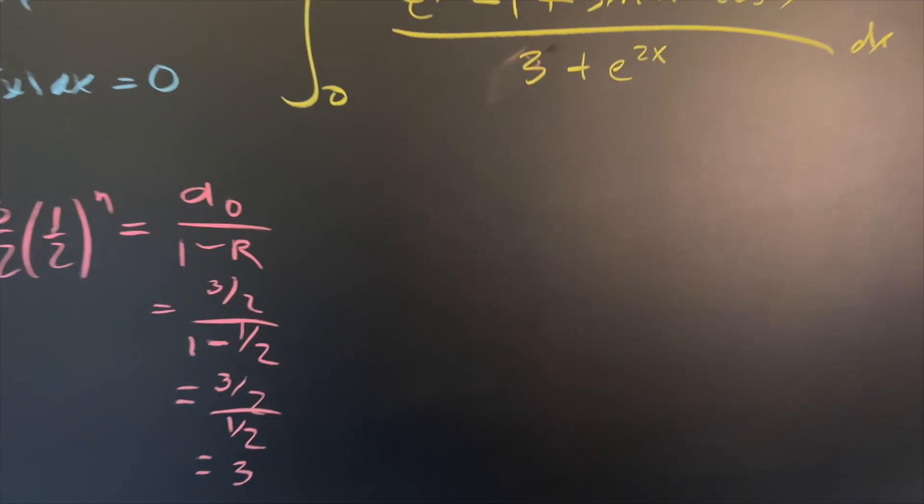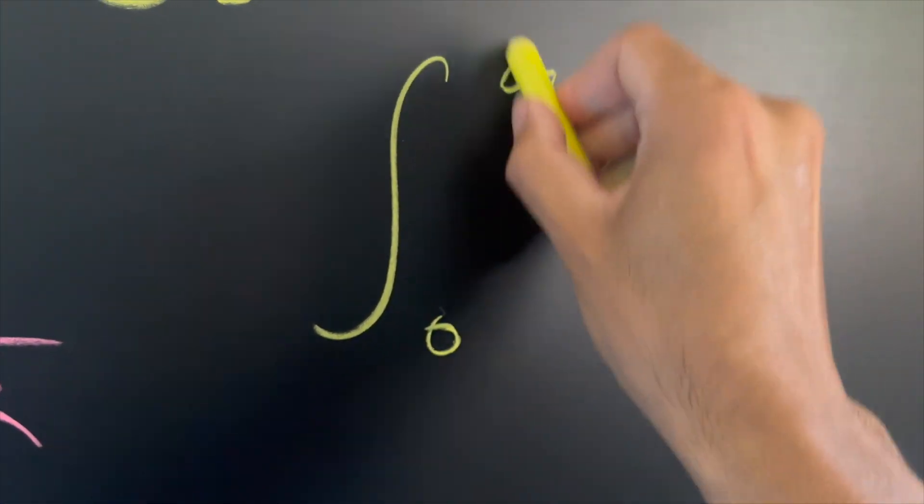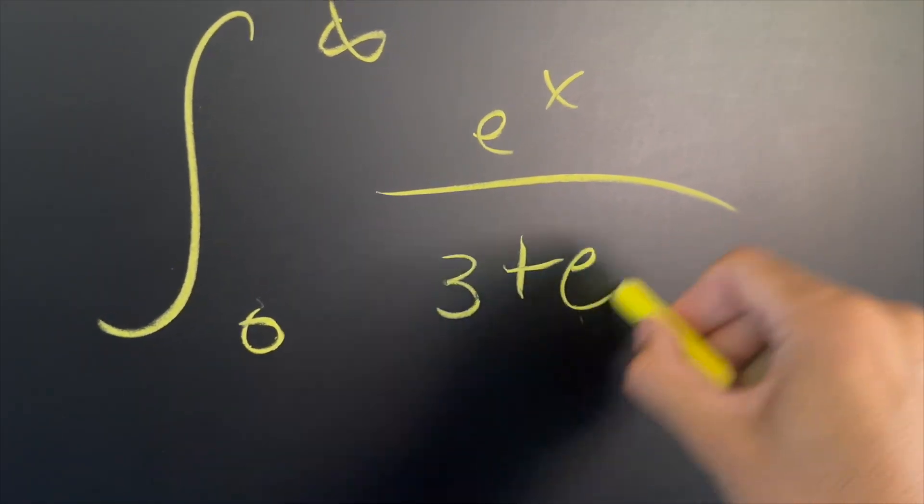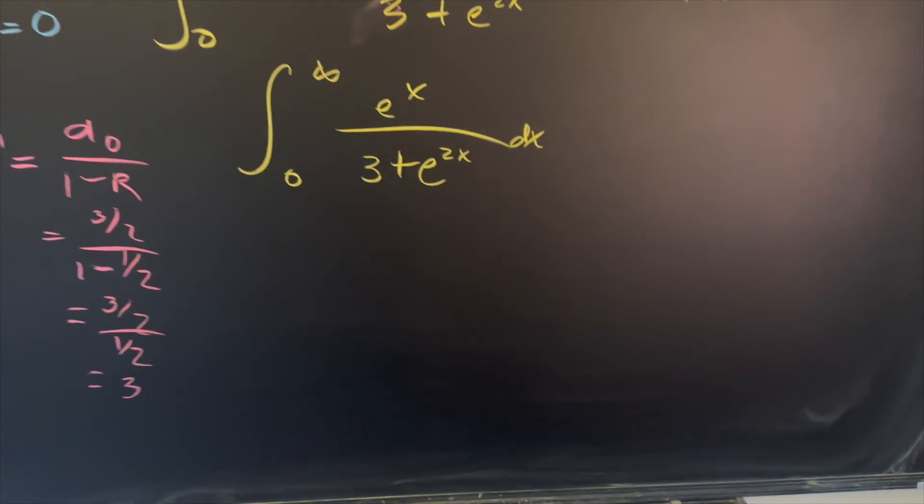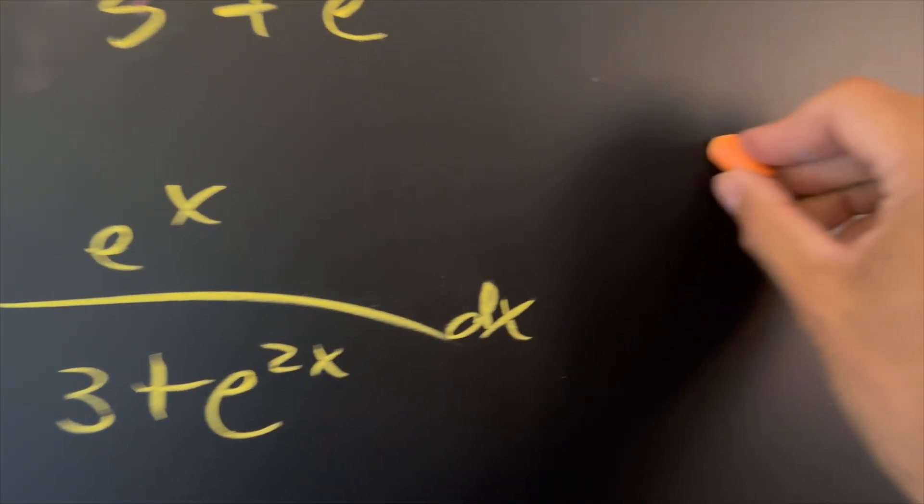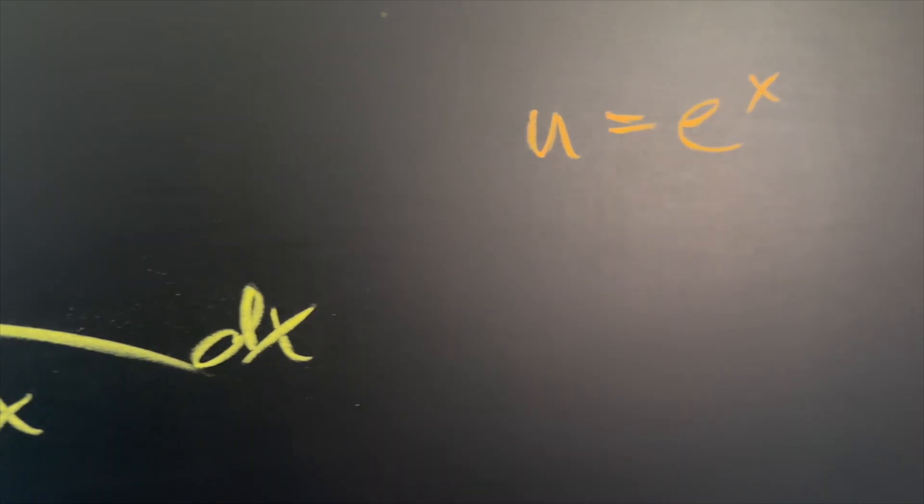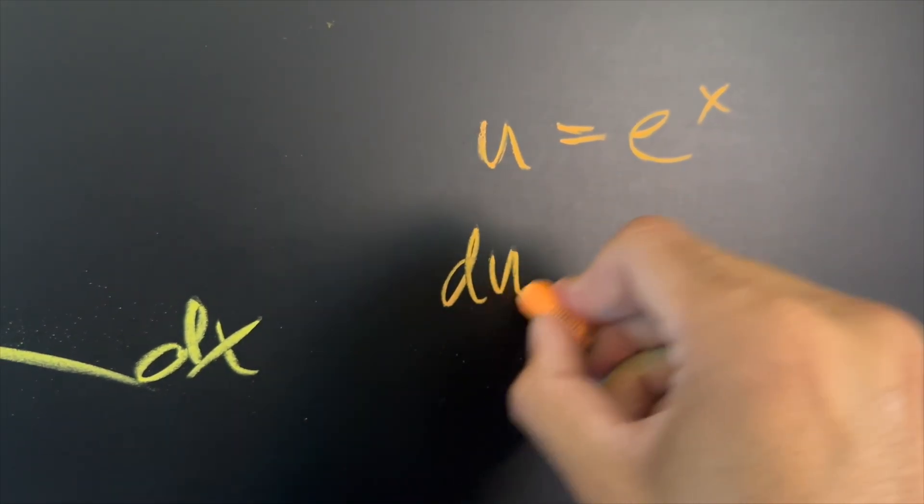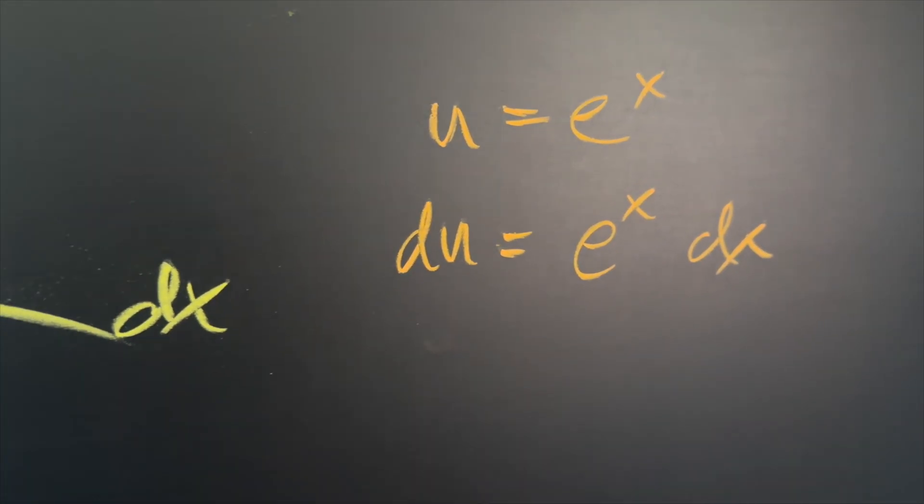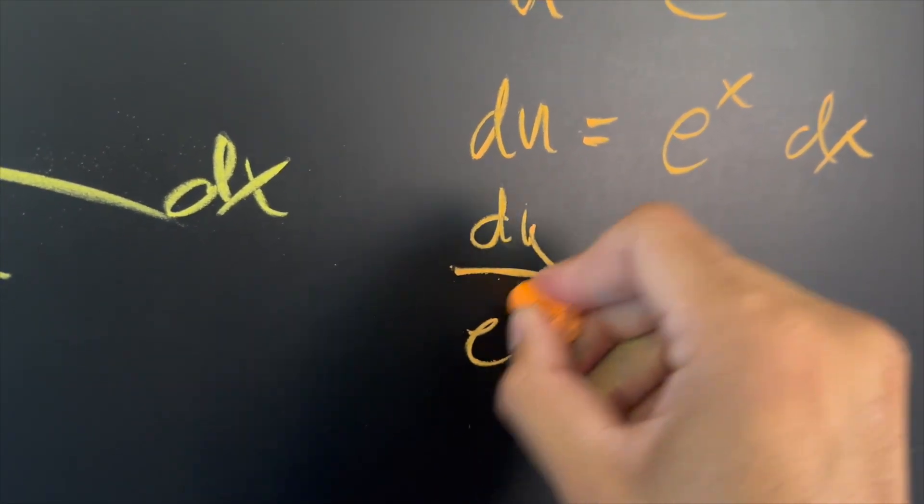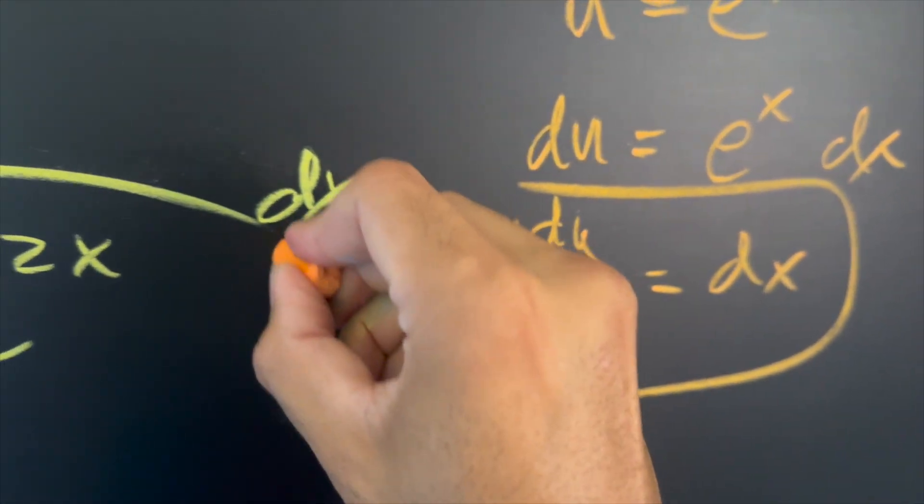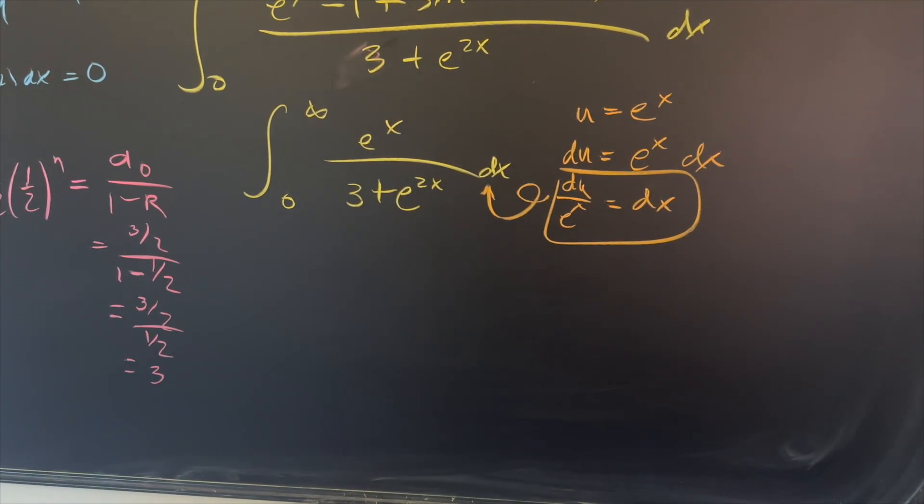So let's go ahead and start simplifying our integral a little further. Well, we have zero to infinity. We establish that the top is just e to the x and then we have three plus e to the two x dx. All right. So now what we can do is a simple substitution. We can make u equal to e to the x. So if we have u equal to the e to the x, then our differential du will become e to the x dx. And this is perfect because we can divide the e to the x to the other side. And we have du over e to the x is equal to dx, which is perfect because that's exactly what we're going to use for our dx there.